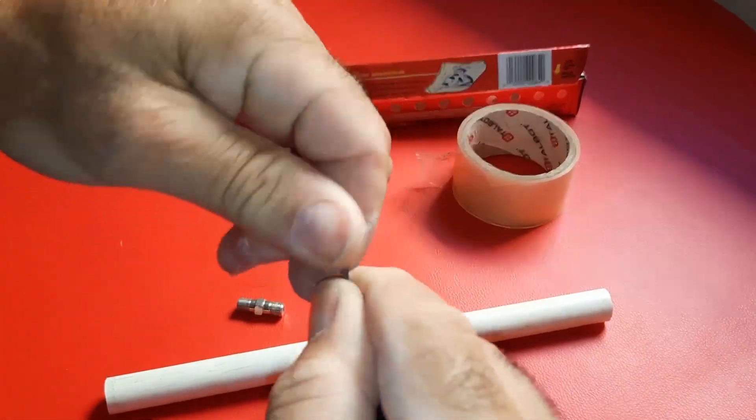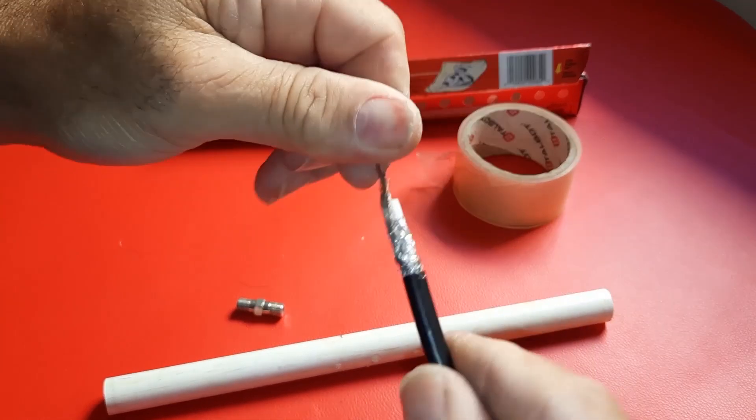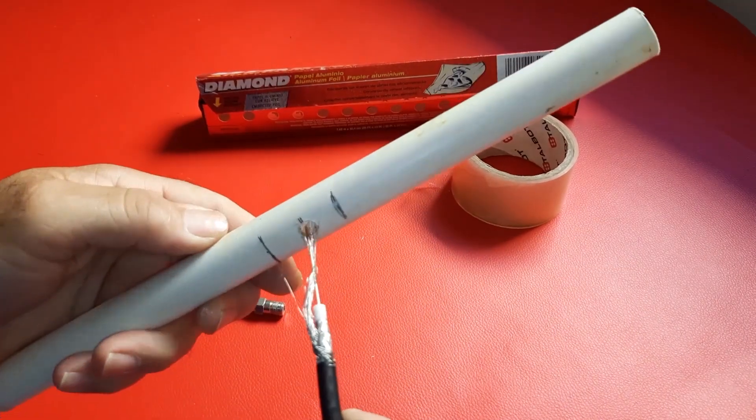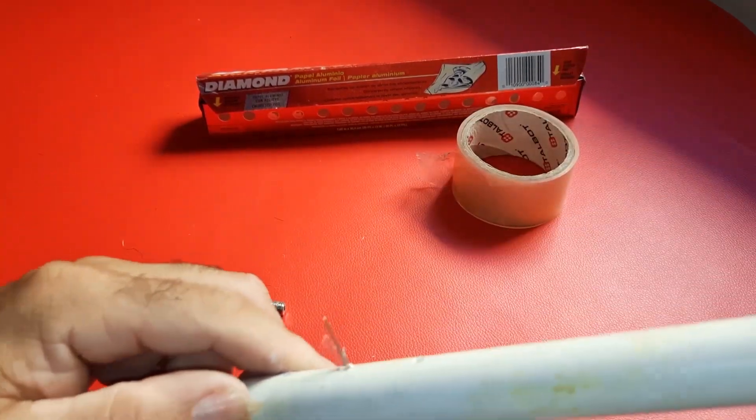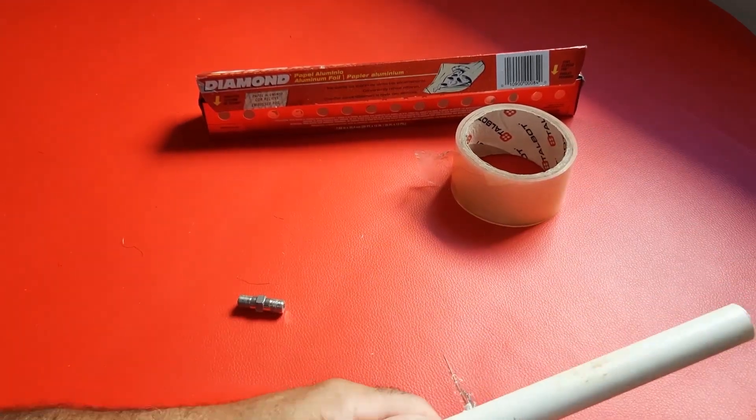4. Insert the coaxial cable into the center hole, ensuring a snug fit with the tip coming out of the smaller hole. Both ends of the cable should be inserted into the small holes we made.